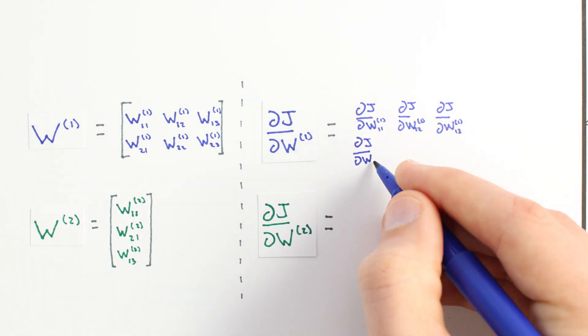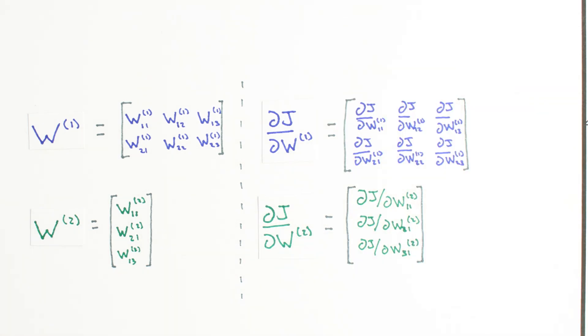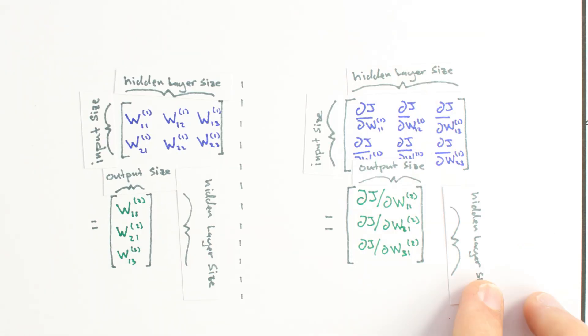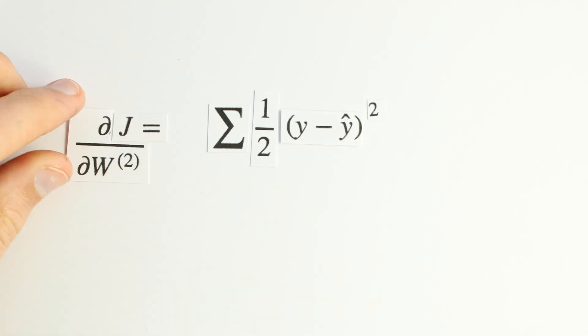We should have just as many gradient values as weight values, so when we're done, our matrices djdw1 and djdw2 will be the same size as w1 and w2. Let's work on djdw2 first.